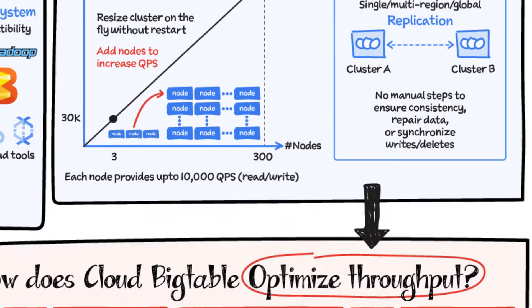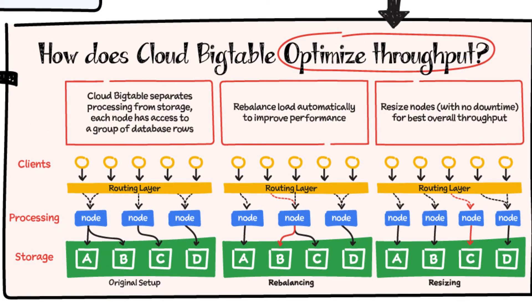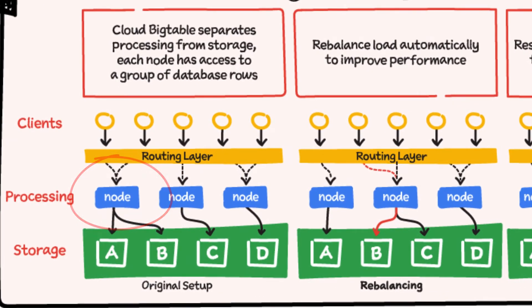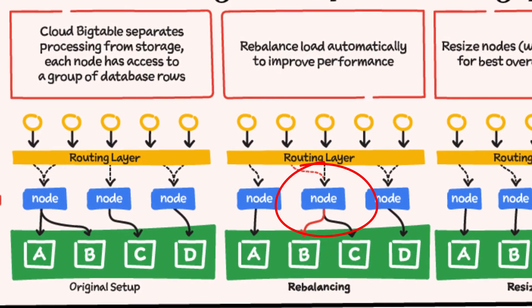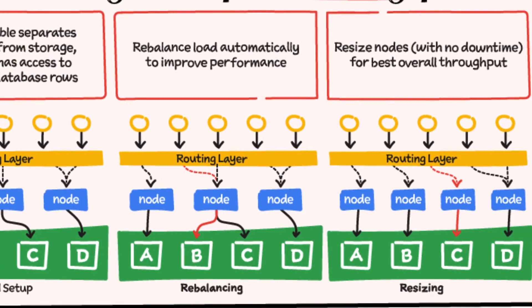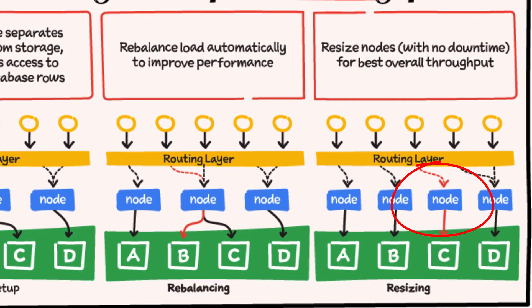How does Bigtable optimize throughput? It does that through separation of processing and storage. Cloud Bigtable is able to automatically configure throughput by adjusting the association of nodes and data. In the rebalancing example, if node A is experiencing a heavy load, the routing layer can move some of the traffic to a less heavily loaded node, improving overall performance. Resizing comes into play when a node is added to ensure balanced load across nodes, ensuring the best overall throughput.